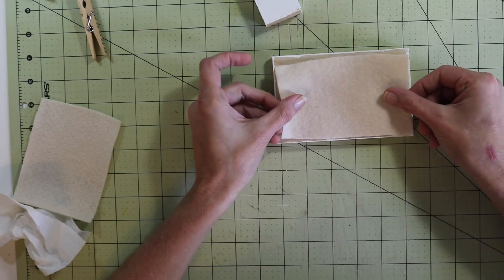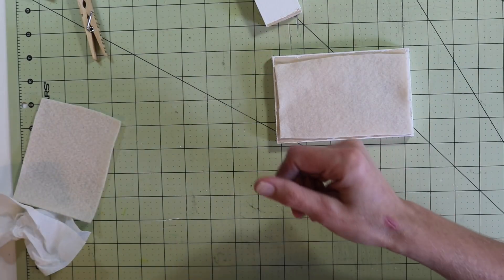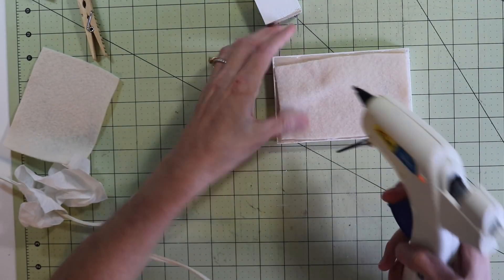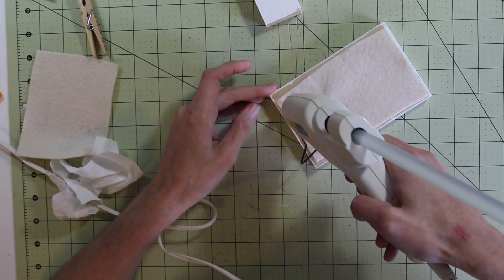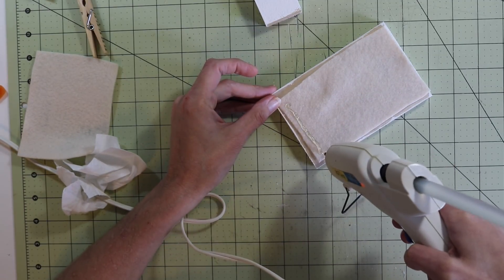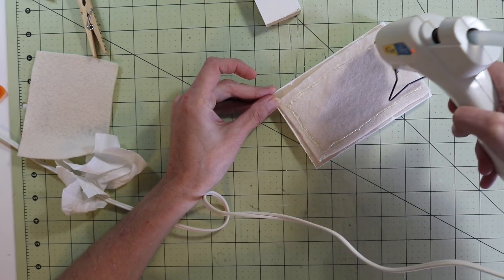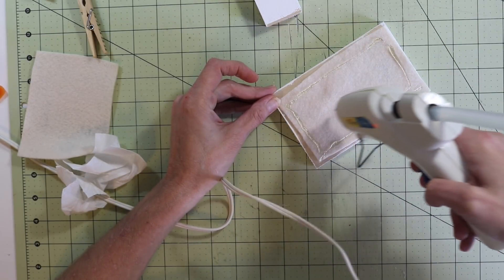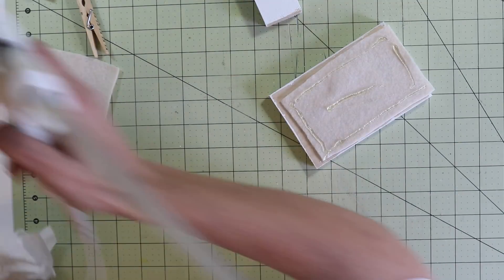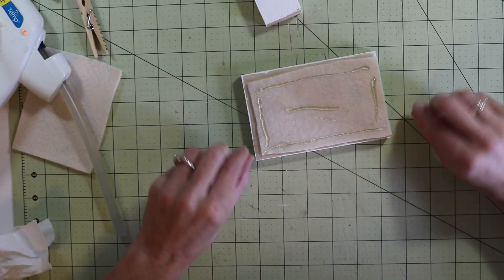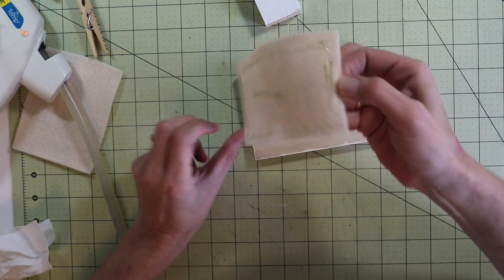First I'm going to flip the base over and hot glue some felt to that. I'm just going to go around the edges, a little bit in the middle. Then flip this over and glue this to the back side.